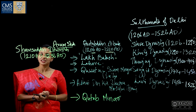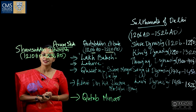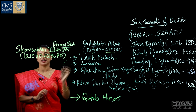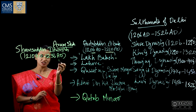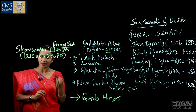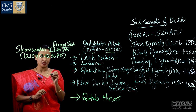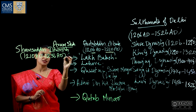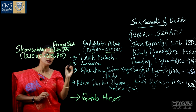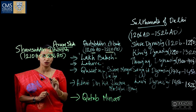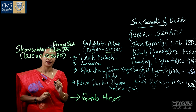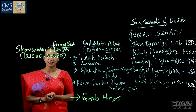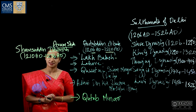Shamsuddin Iltimish is regarded as the real founder of the Sultanate of Delhi, because many important administrative reforms were established during his period. He is rightly called the real founder of the Sultanate of Delhi. He introduced the important land revenue system known as the Iqta system.